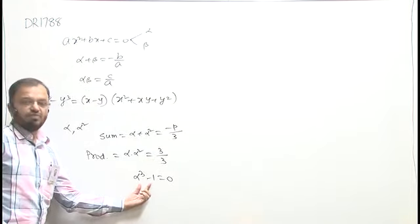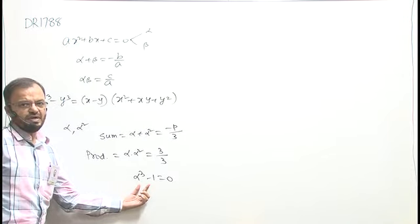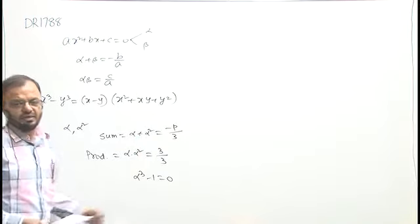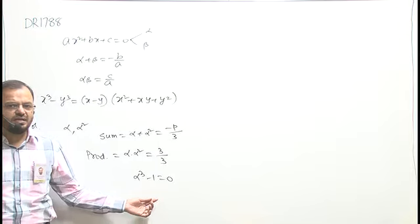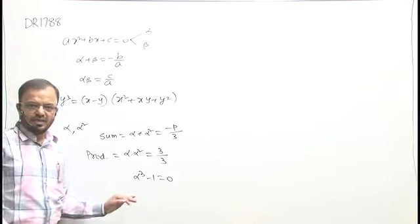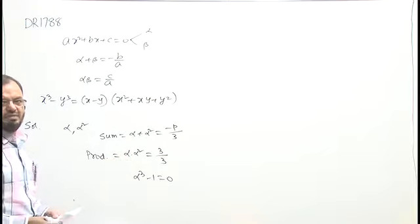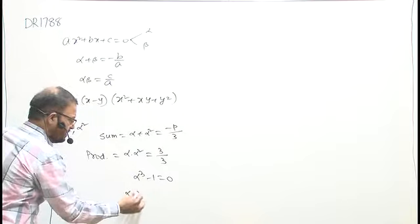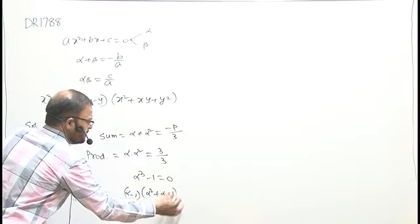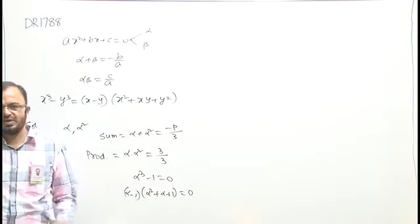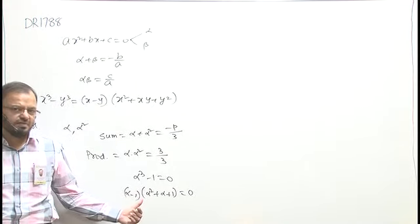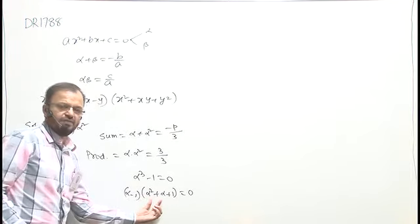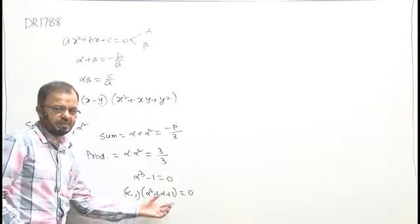Now, I have to find the value of alpha. If I find the value of alpha and substitute, I will get the value of P. To find the solution, I will make use of the factors. Here, I can write alpha minus 1, into alpha square plus alpha plus 1, equal to 0. One factor is giving the value of alpha equal to 1. For the other factor, I will use the value of alpha square plus alpha.